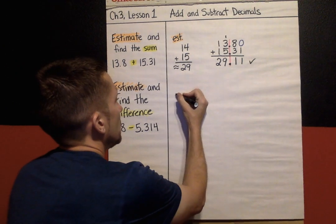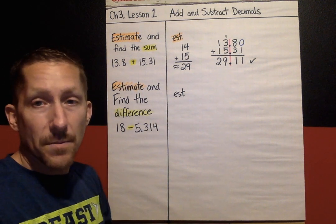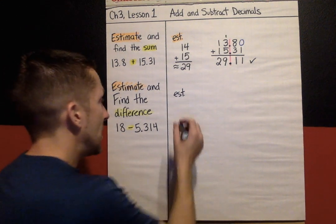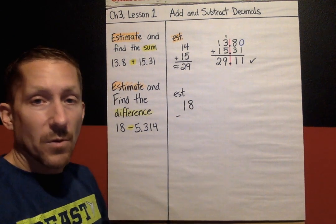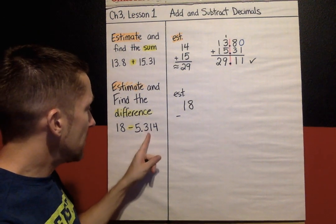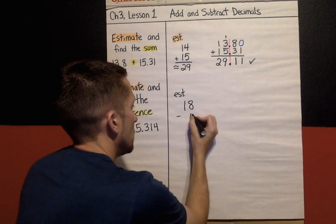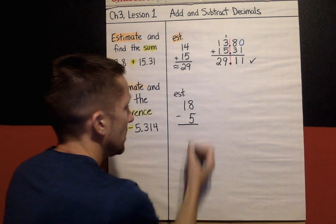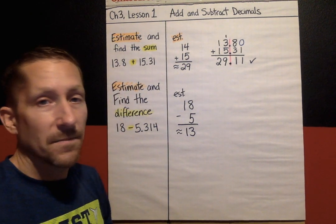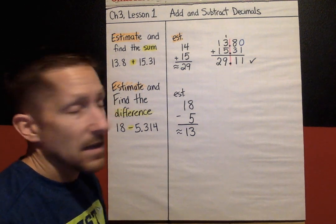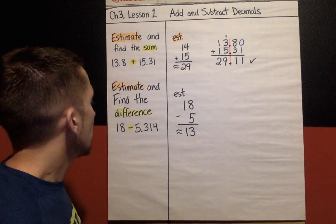So, estimate and find the difference of 18 subtract 5.314. Quick estimate. Again, same thing we did in this example. We're going to round these to the nearest whole number. 18 is already just a whole number all by itself. 18 subtract 5.314. Well, it's between 5 and 6. But because the next digit is a 3, this is closer to 5 than it is 6. So, in my estimate, I'm going to make it a 5. My quick estimate is 18 subtract 5. My quick estimate is answer should be about 13. Those two little wavy lines mean approximately. So, in estimate, it's about 13 is what my estimate is going to be.